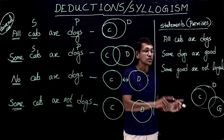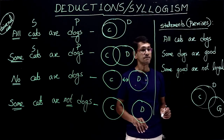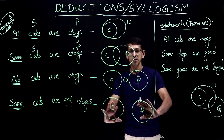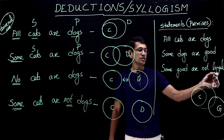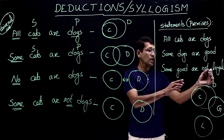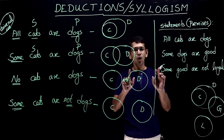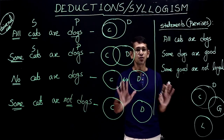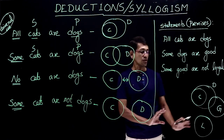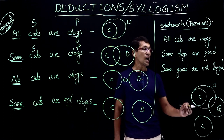The third statement is some good are not loyal — a some-not statement, so the two terms are separate with no intersection. We already have the diagram of good; we draw loyal separately without intersecting good. Also, loyal is not supposed to intersect cats or dogs because none of the statements say loyal intersects with dogs or cats. We keep the minimum intersection — if it is not given, you are not supposed to connect those diagrams. So ultimately, this is the complete Venn diagram for these three statements.